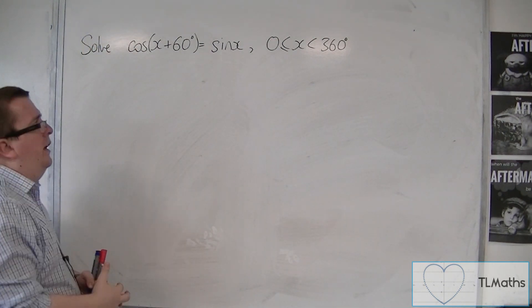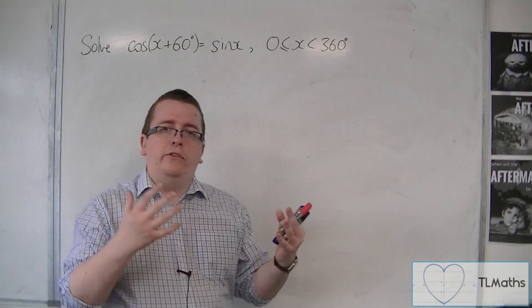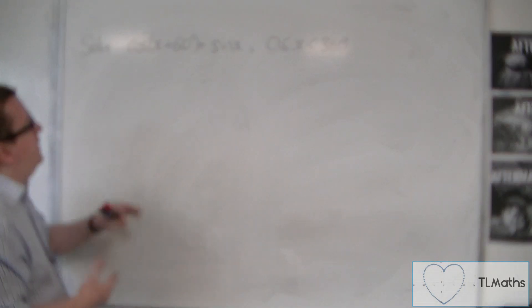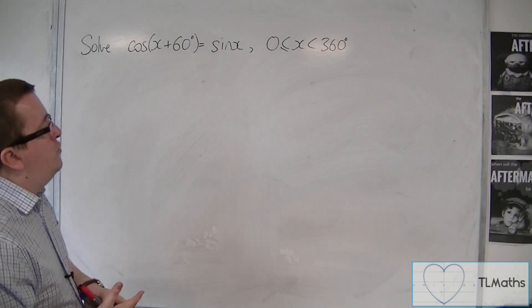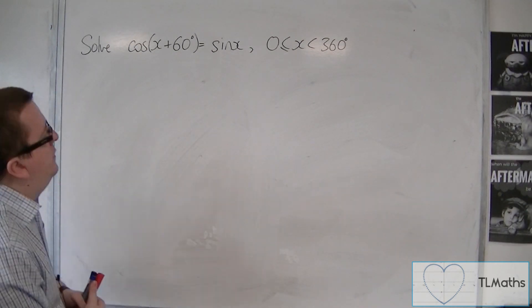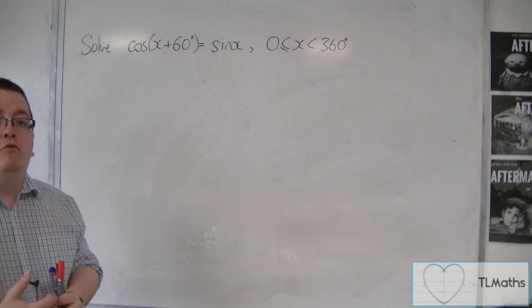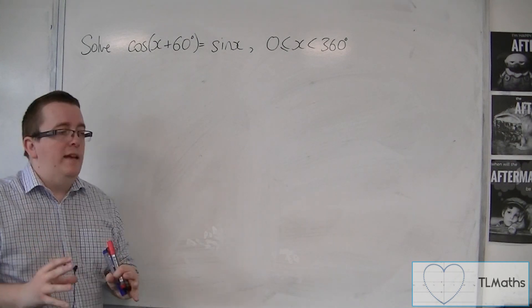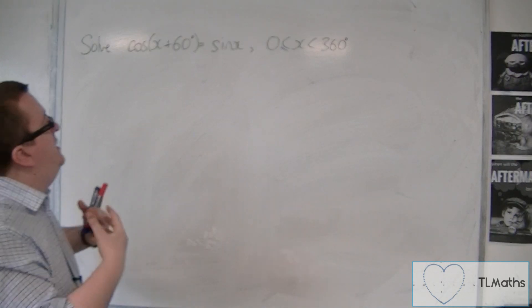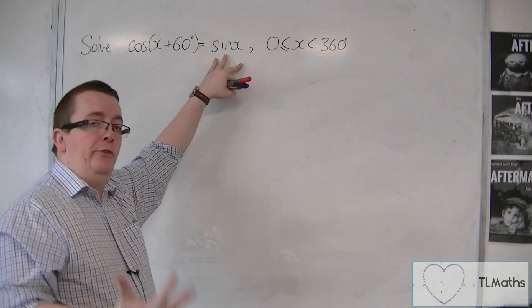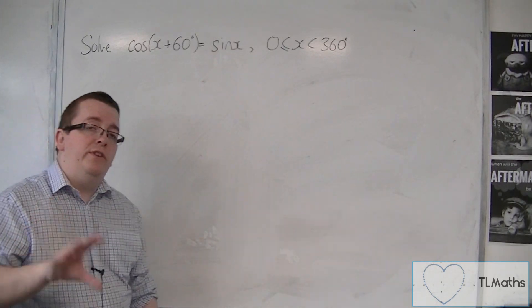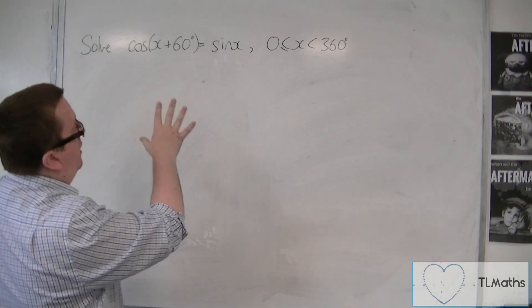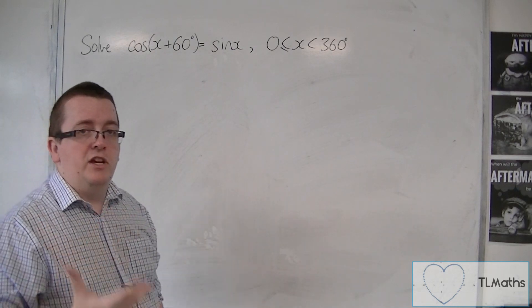This looks inherently difficult because we have a cosine and a sine, one equaling the other, with what appears to be a translation involved. The first thing I'm going to do to make this easier is to try and write sine x in terms of cosine of x.